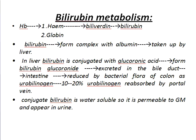In the liver, bilirubin is conjugated with glucuronic acid and forms bilirubin glucuronide. This bilirubin is excreted into the bile duct. From the bile duct, it enters the intestine and is reduced by the bacterial flora of the colon as urobilinogen. Ten to 20% of bilirubin is then reabsorbed. Conjugated bilirubin is water-soluble, so it is permeable to the glomerular membrane and can appear in urine.